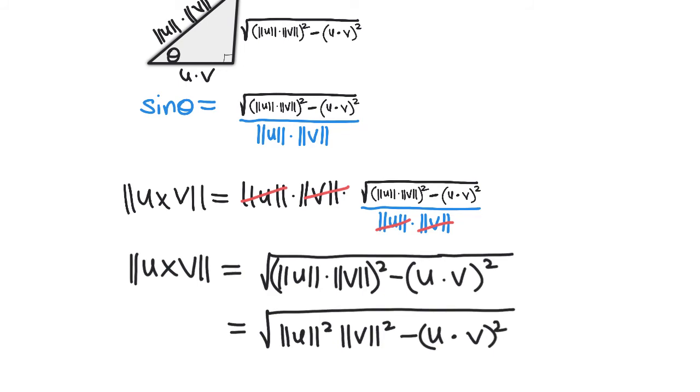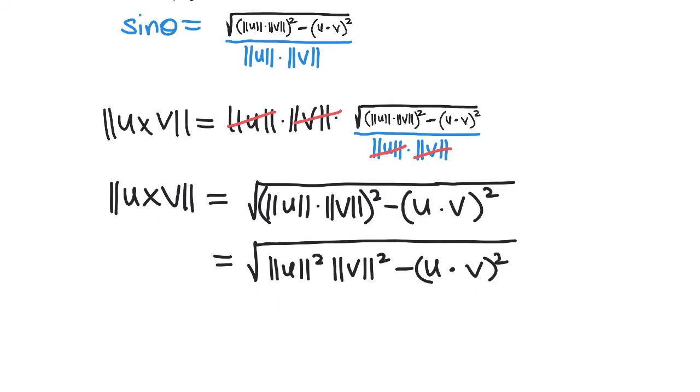What we end up with is a new rule to find the magnitude of the cross product that does not involve trig at all. The magnitude of u cross v equals the square root of ||u||² ||v||² minus (u dot v)².